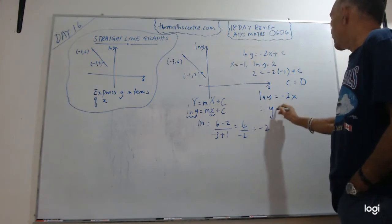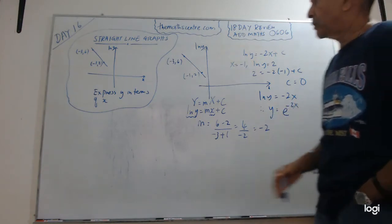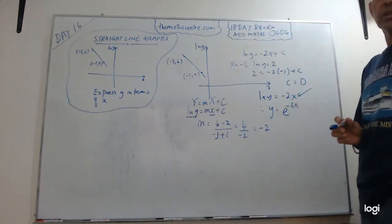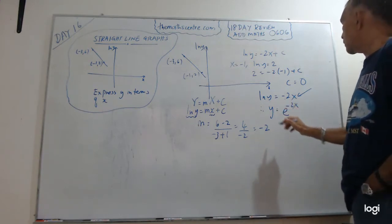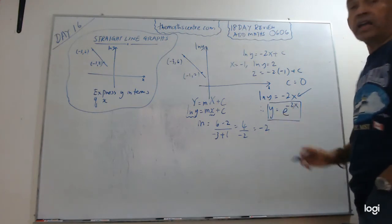So you have ln Y equals to minus 2 X. Therefore, Y equals to E to the power minus 2 X. Remember the question, right? They asked you to express Y in terms of X. So this is what you have finally, ln Y equals to minus 2 X. Therefore, using the definition of logs, you have Y equals to E to the power minus 2 X. And that's it.